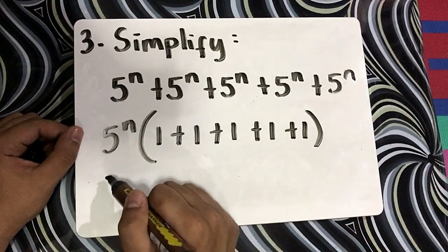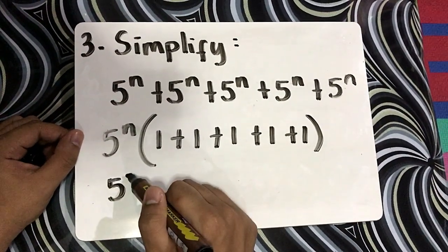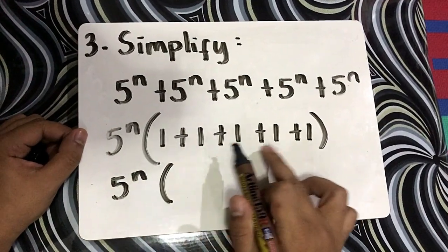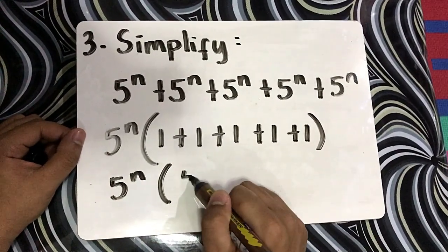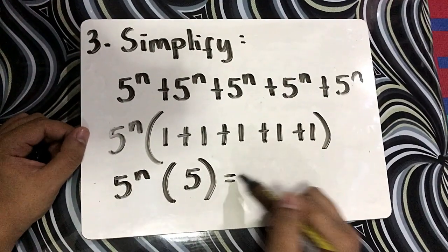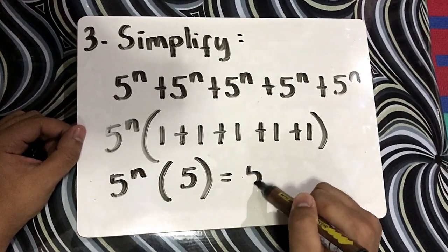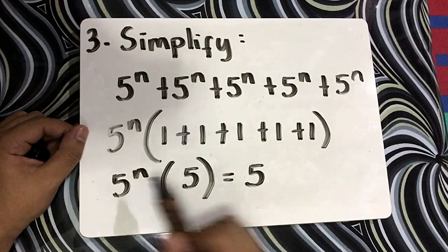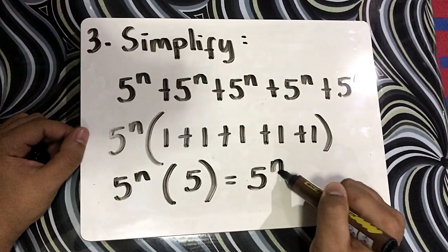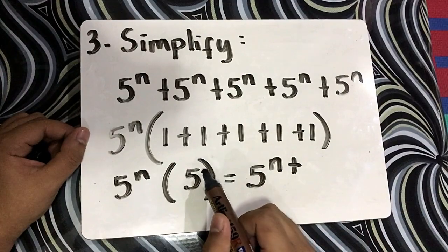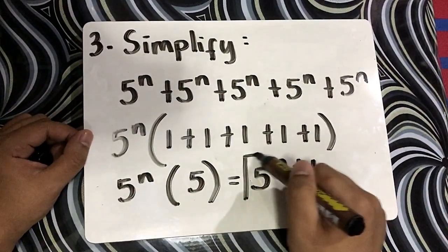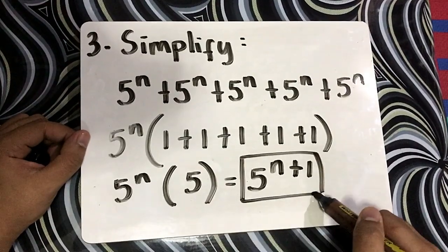Now, copy the common factor: 5 raised to n. Then 1 plus 1 plus 1 plus 1 plus 1 gives you 5. Since they have the same base, copy the base and add the exponents. That is n plus 1, since our exponent here is 1. So the final answer is 5 raised to n plus 1.